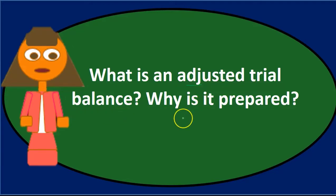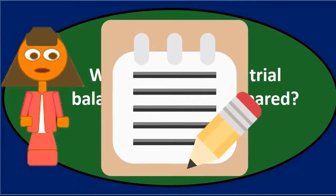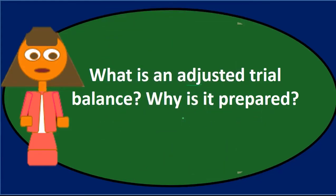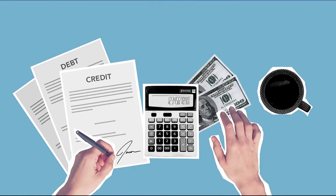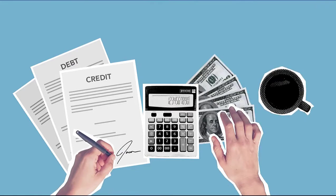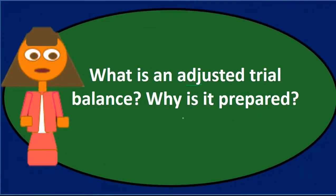So the trial balance, remember, is going to be a list of accounts. It's going to have both the account names and the account balances as of a point in time, and of course we'll have debits and credits depending on the normal balance of each account, with total debits equaling total credits at the end of the trial balance.